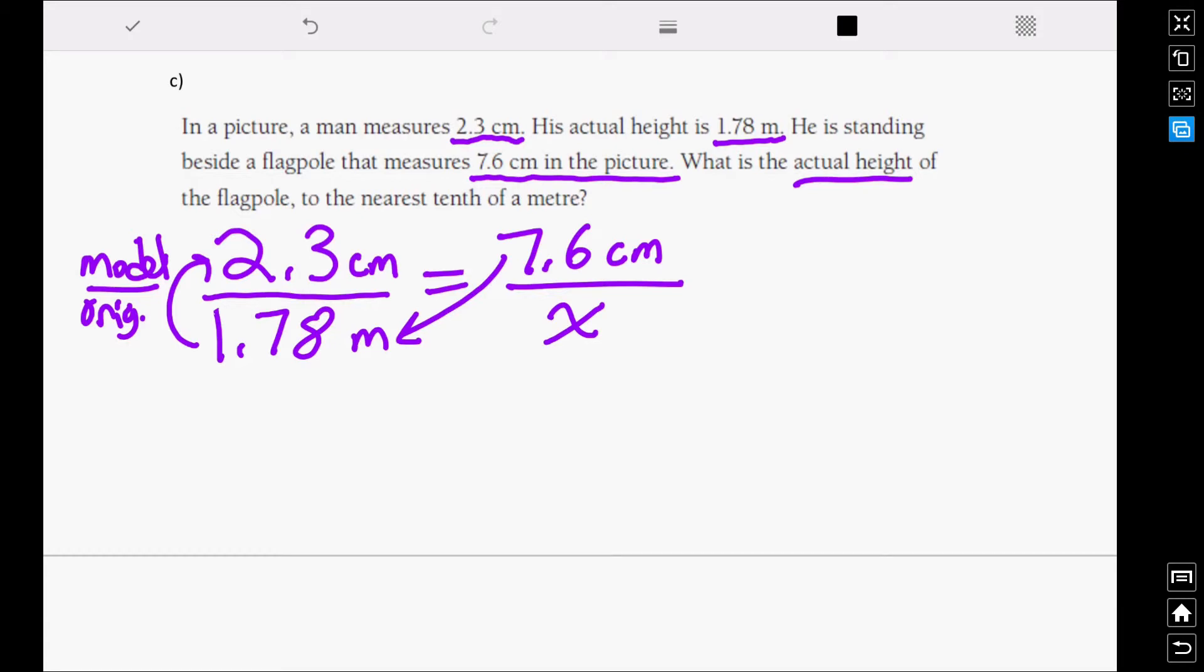And we get the height of the flagpole, to the nearest tenth, 5.9 meters. So in this particular problem, because the man and the flagpole are in the same picture, they effectively have the same scale statement, and we can just set up a proportionality ratio just like we did in the last lesson when we were dealing with proportions.